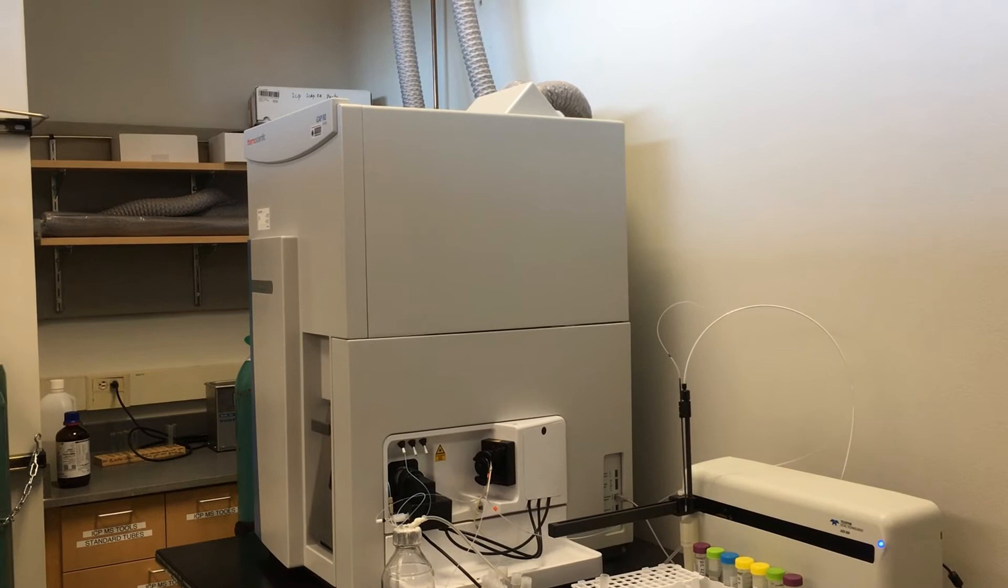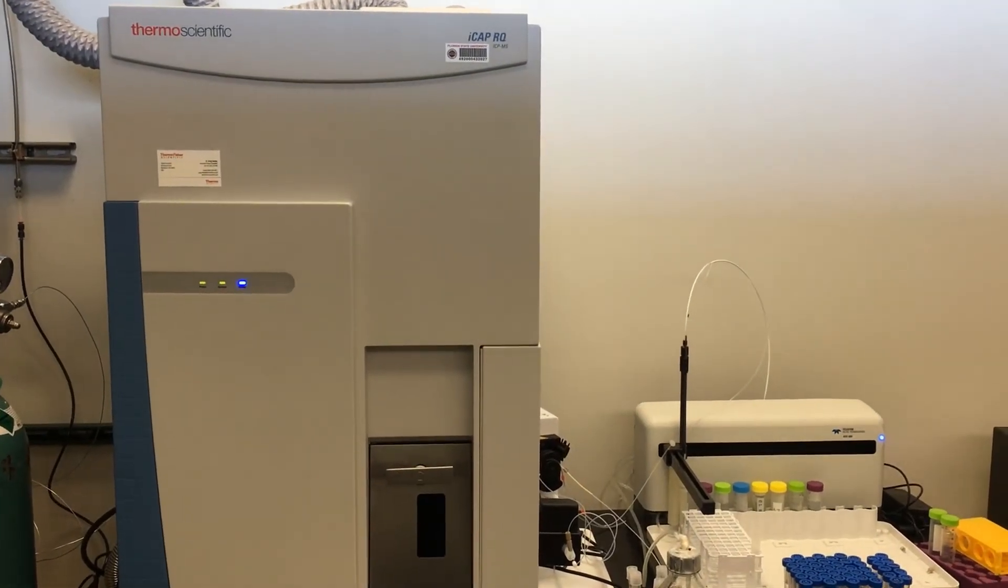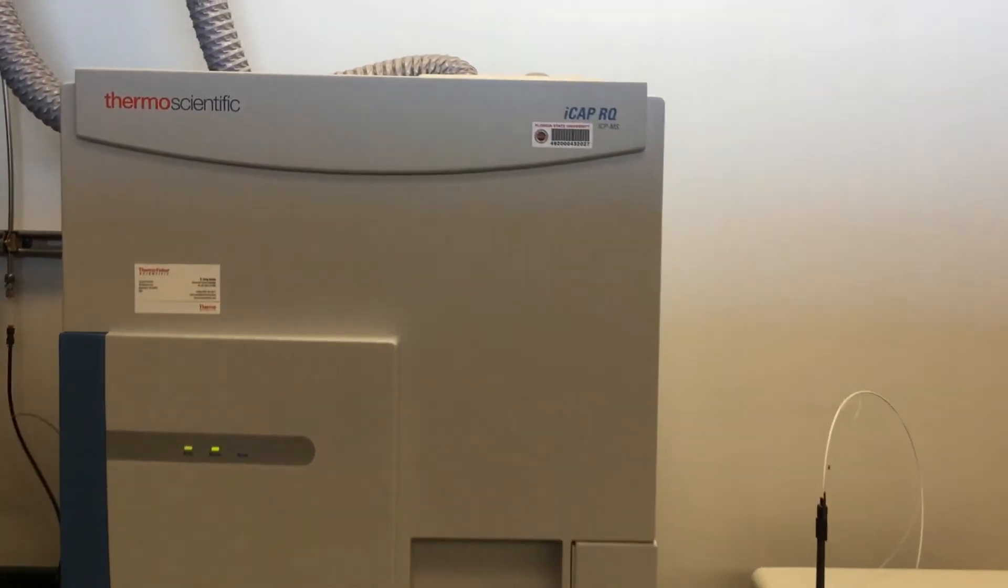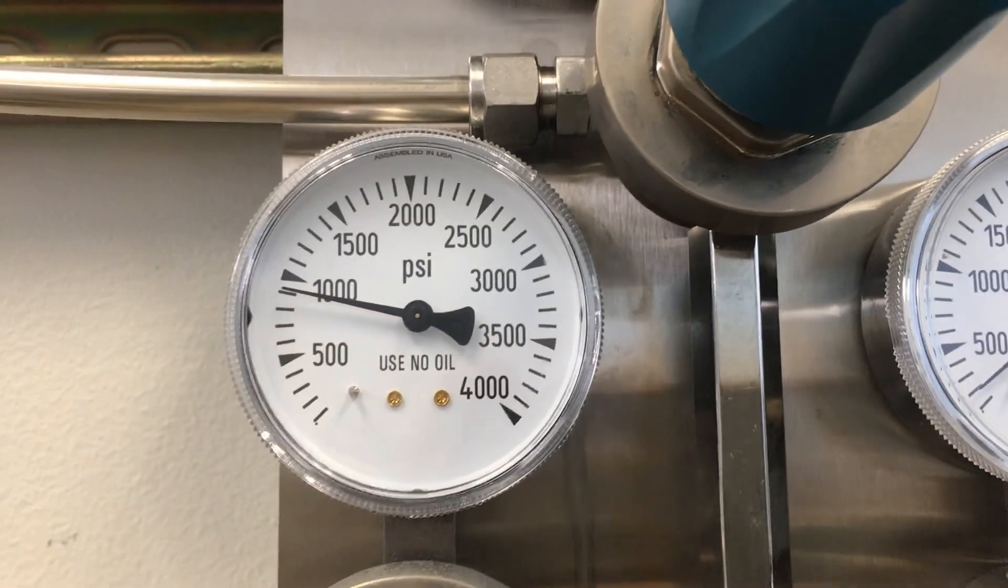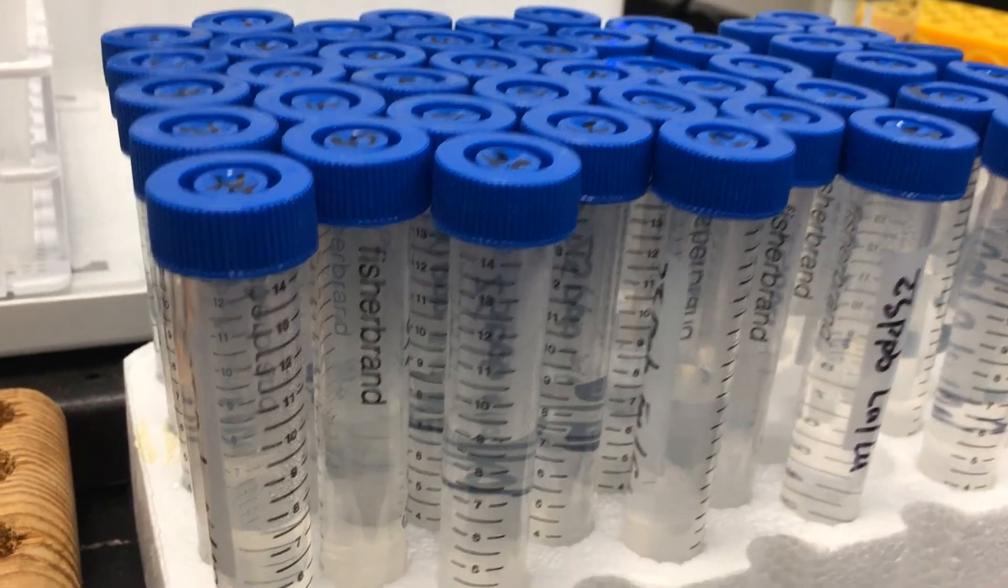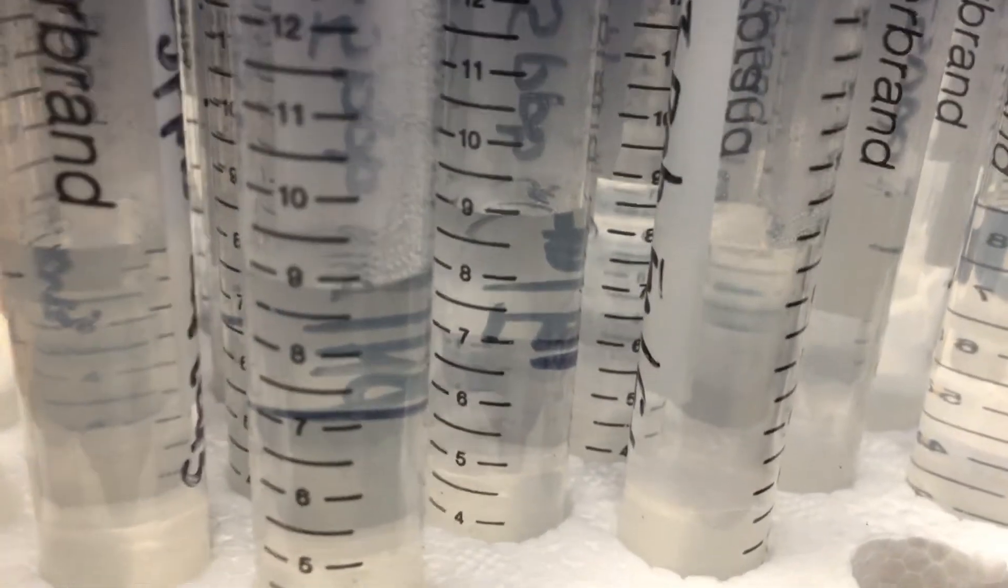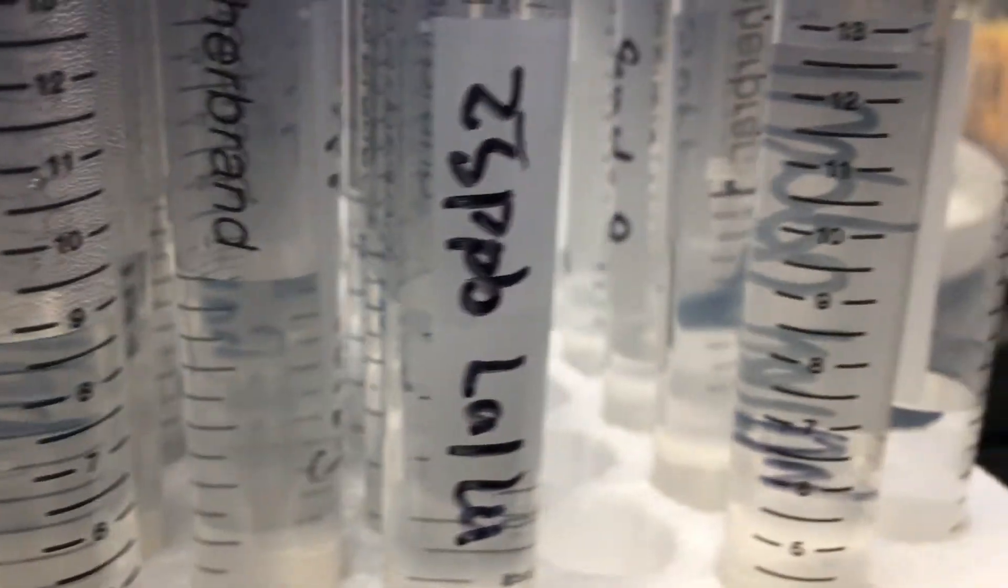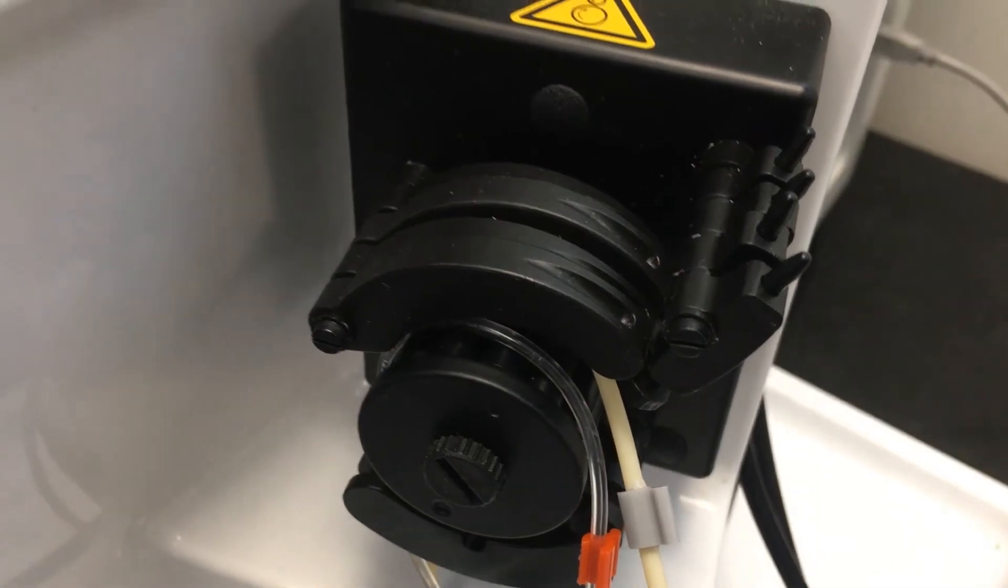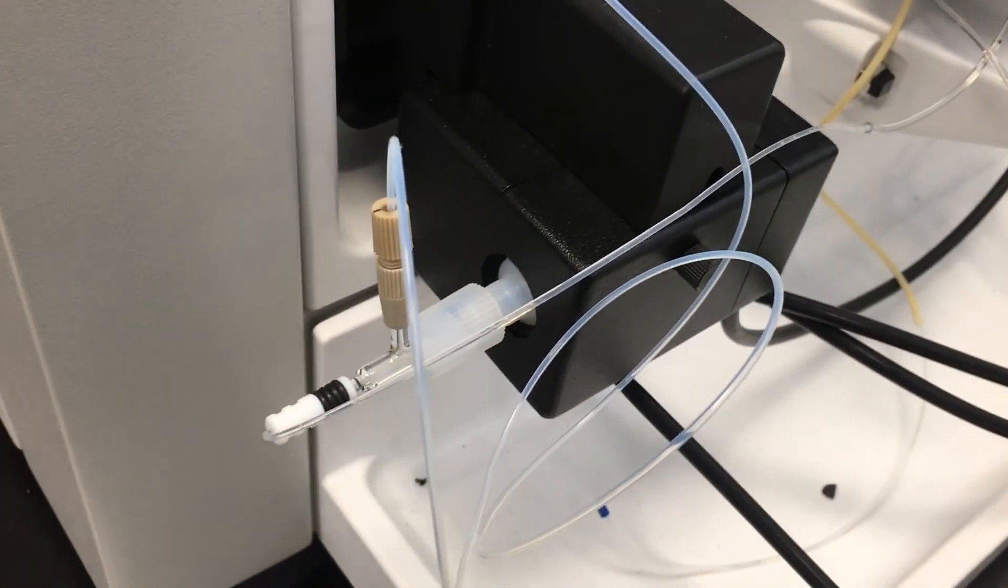Inductively coupled plasma mass spectrometry (ICP-MS) is an elemental analysis technology capable of detecting most of the periodic table of elements at milligram to nanogram levels per liter. It is used in a variety of industries including, but not limited to, environmental monitoring, geochemical analysis, metallurgy, pharmaceutical analysis, and clinical research.